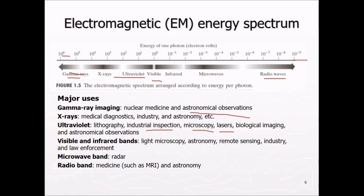Then this visible and infrared band, light microscopy astronomy, remote sensing, very important remote sensing. This digital image processing is very much linked and hooked with this remote sensing and also visible and infrared can be used for industry and law enforcement. Microwaves specifically for radar and communication and radio waves medicine such as MRI and astronomy.